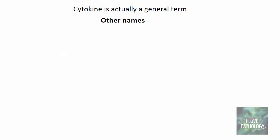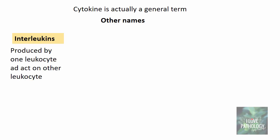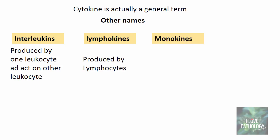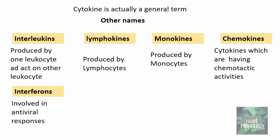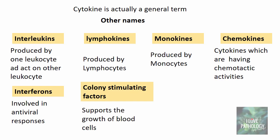Cytokine is actually a general term. Other names we routinely use include interleukins, which are produced by one leukocyte and act on another leukocyte — there is a crosstalk between two leukocytes, hence the name interleukins. We also have lymphokines, which are produced by lymphocytes; monokines, which are produced by monocytes; chemokines, which are cytokines with chemotactic activities; interferons, which are involved in antiviral responses; and colony stimulating factors, which support the growth of blood cells.